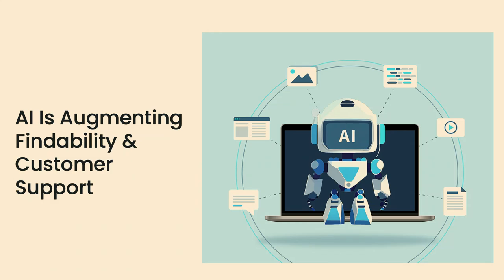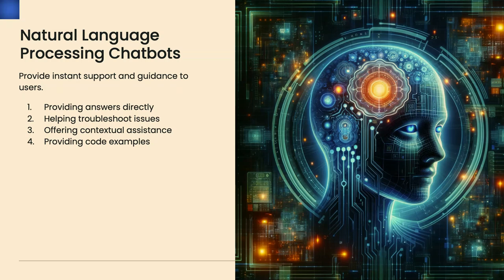AI is also augmenting findability and customer support. There was a really great demo in Portland this year where they're building natural language processing models — using those models to crawl and learn from people's content, then provide a customized chat engine to answer user questions instead of them digging through documentation. With ChatGPT, there's talk about Google losing market share because people are asking questions instead of searching — they just want the answers. When users come to our website and can't type a question and get it served up, they're going to get upset, and that's why you're seeing a lot more of these tools come forward.